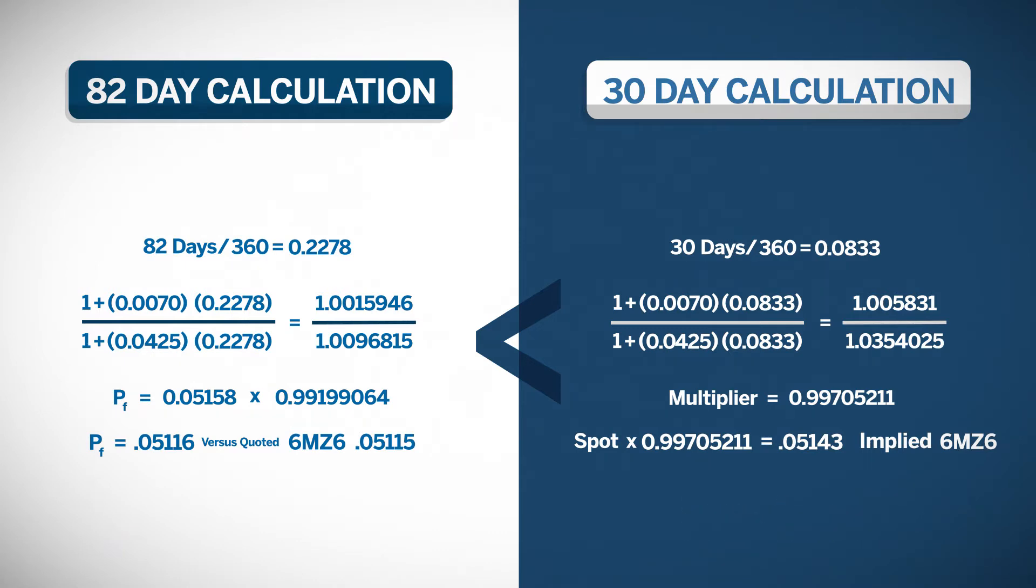As a futures contract approaches expiration, the time value of money runs out and futures price converges toward spot. The 30-day implied futures price comes to 0.05143 versus a spot of 0.05158. When we subtract the futures price from the spot, we get a negative 15 points. The basis has narrowed from negative 43 to negative 15. At expiration, futures and spot will converge to the same level.